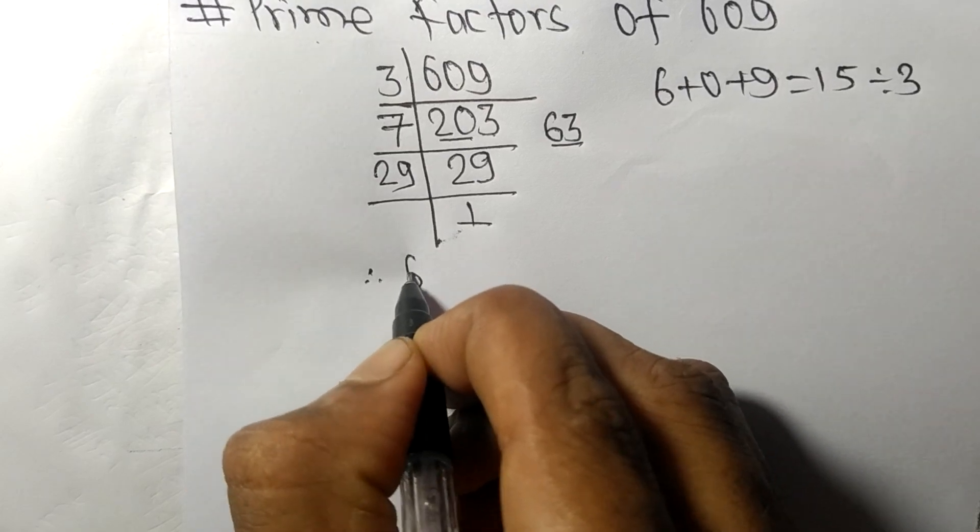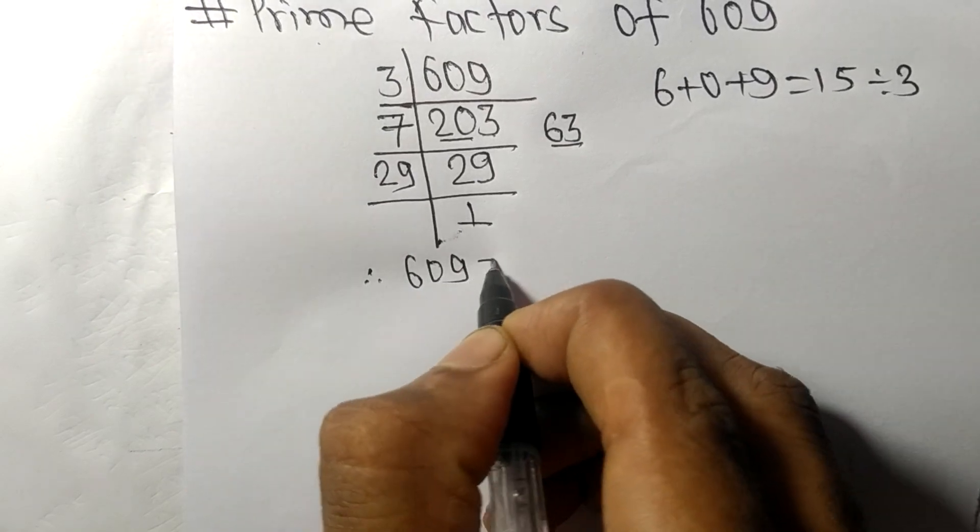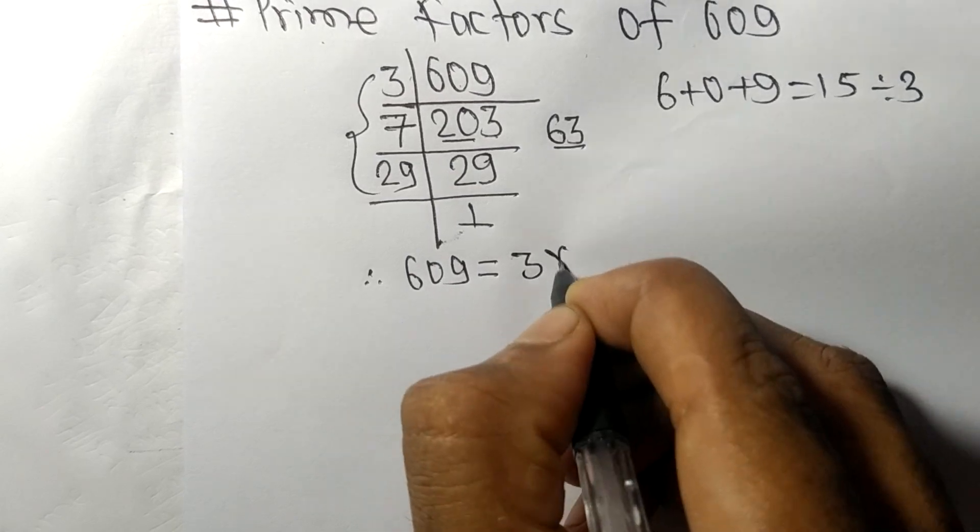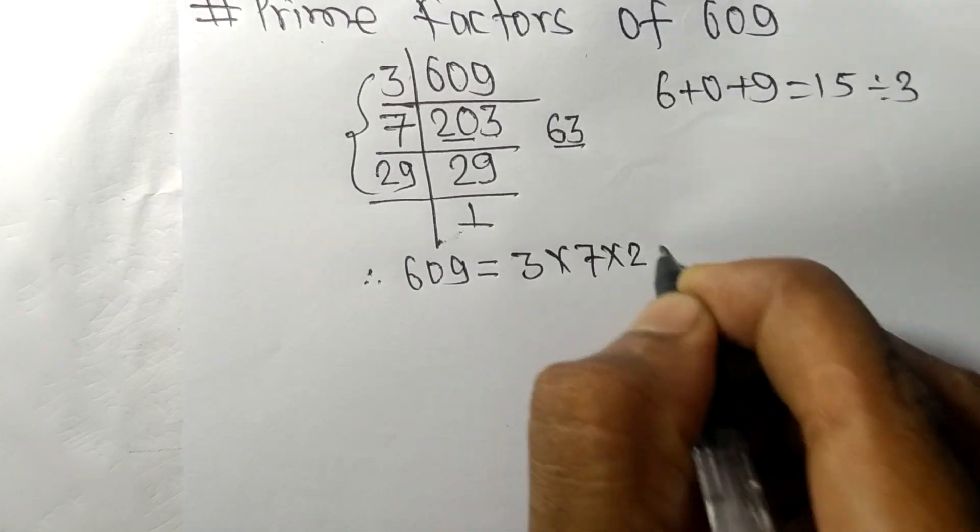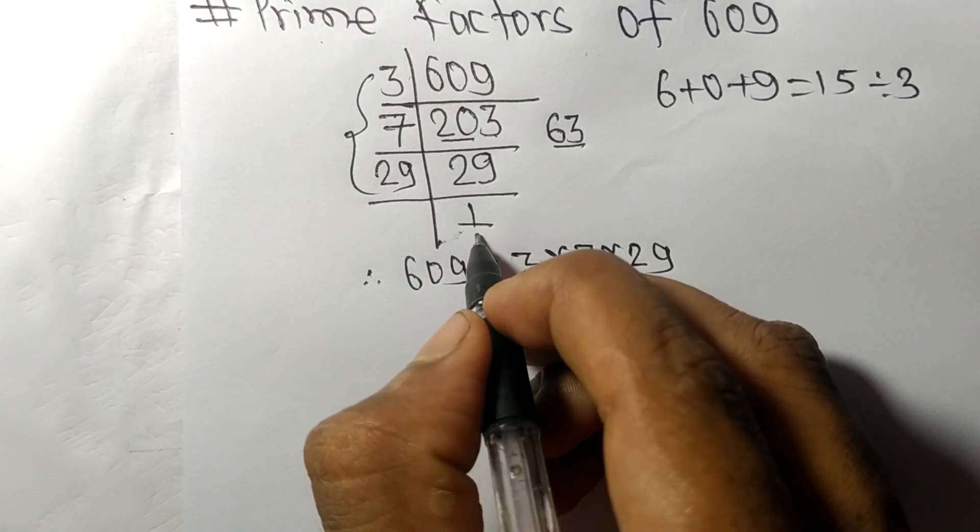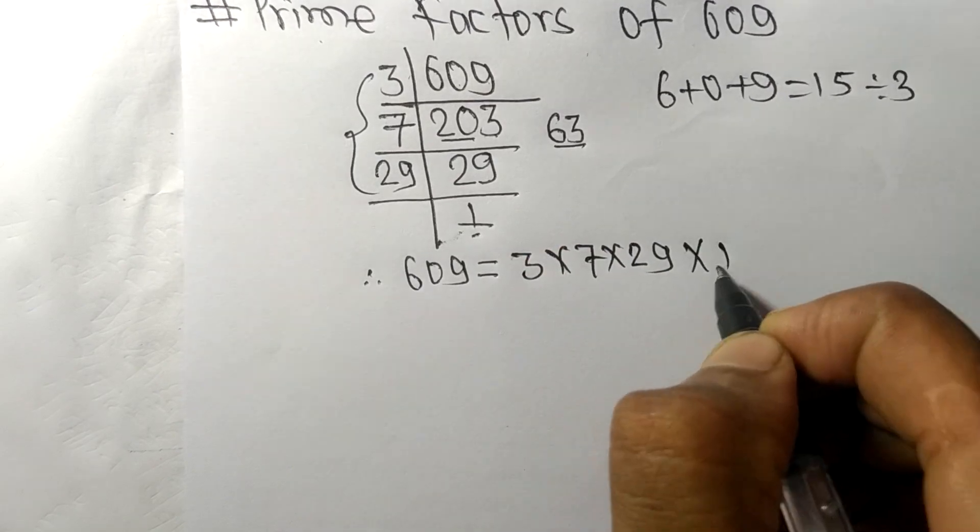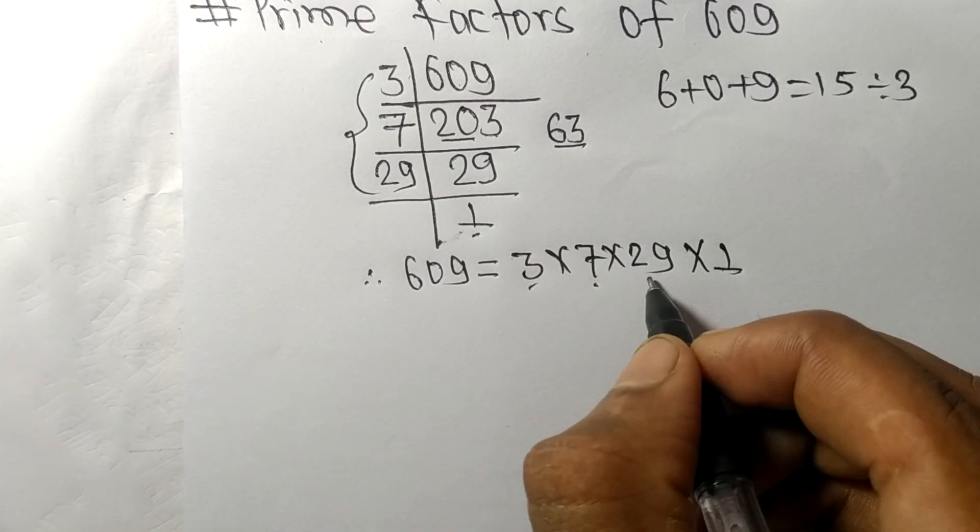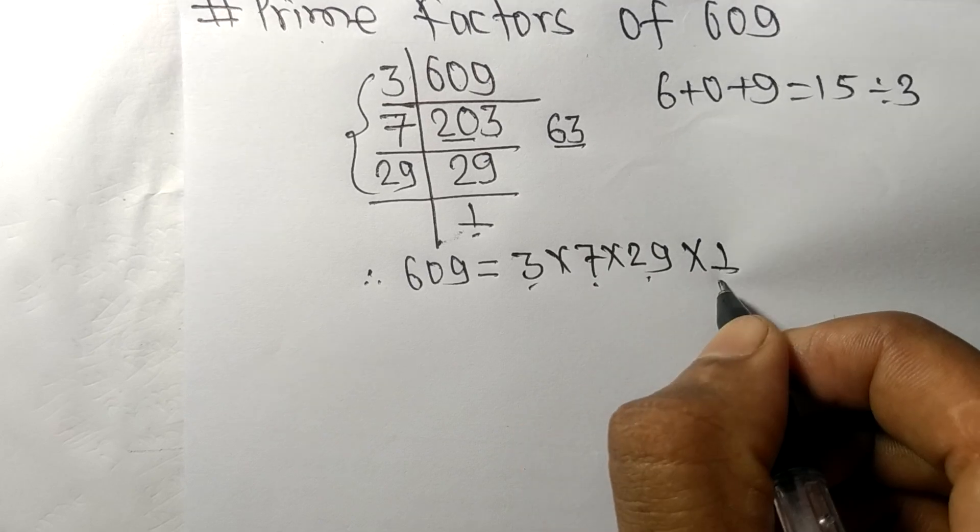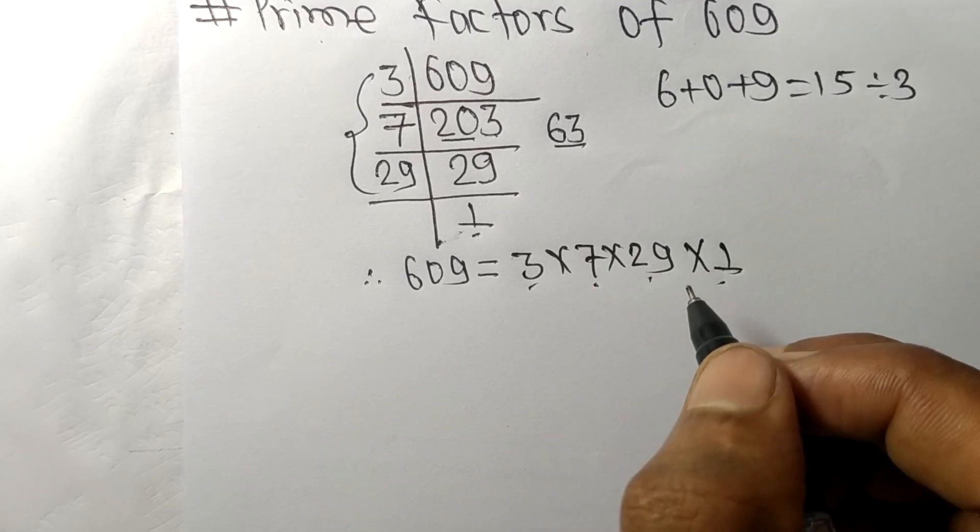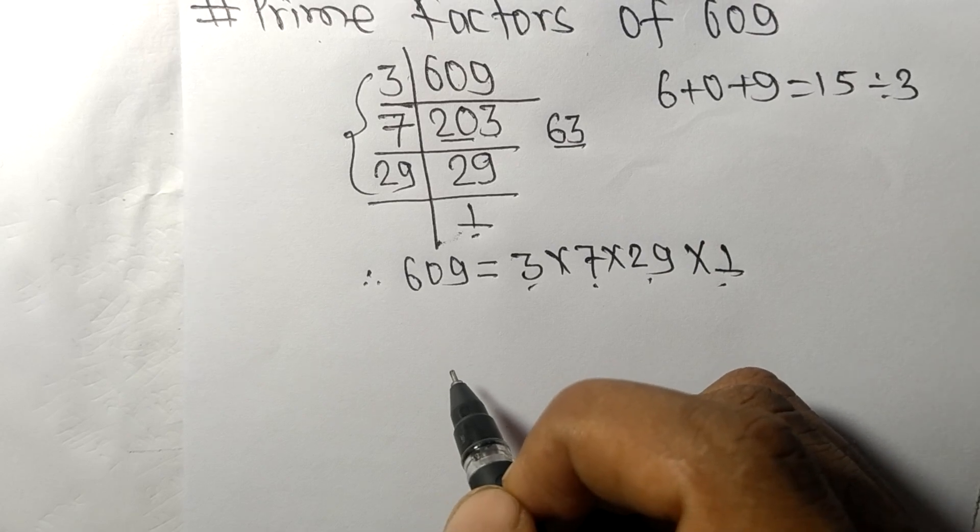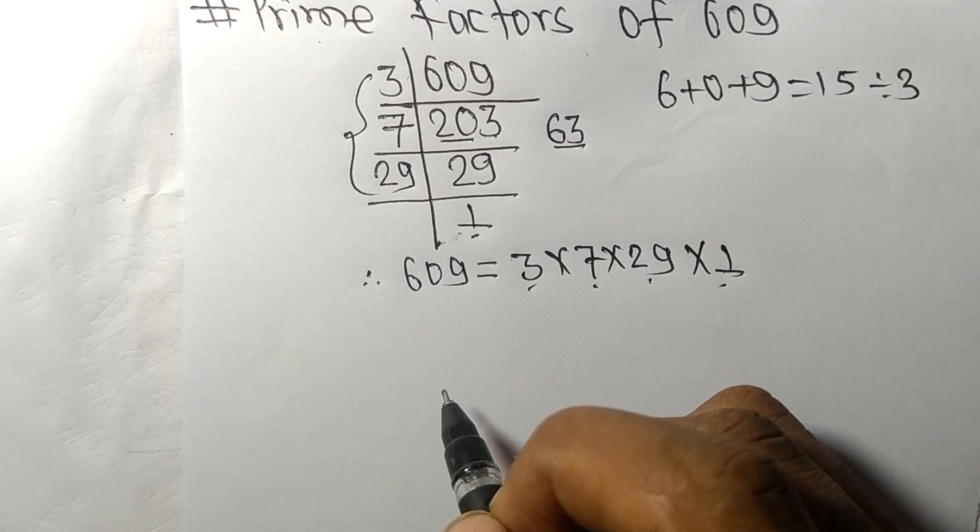Therefore, 609 is equal to 3 times 7 times 29 times 1. So 3, 7, 29, and 1 are the prime factors of 609. So this much for today, and thanks for watching.